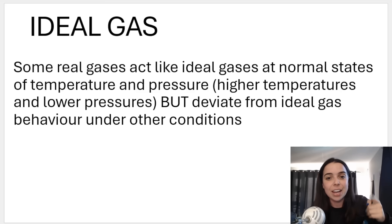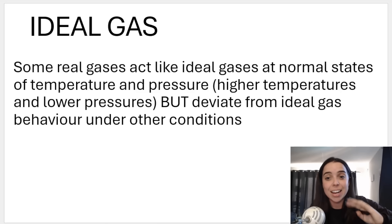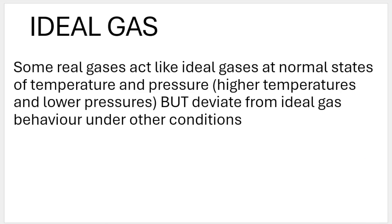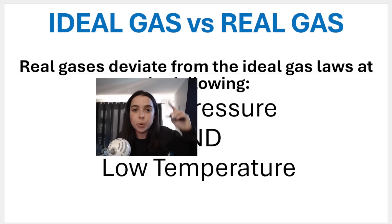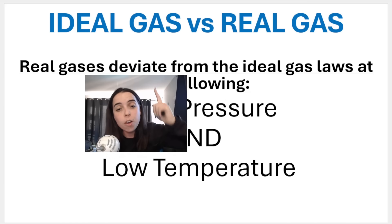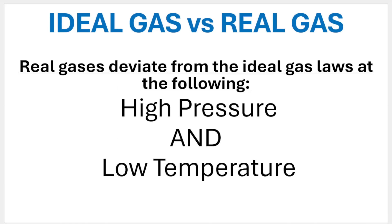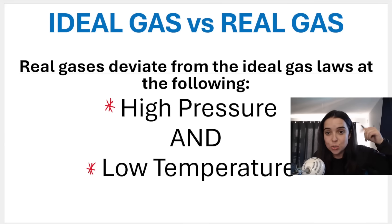As soon as we approach certain conditions such as low temperatures and high pressures, that's when real gases deviate from ideal gas behavior — they no longer act like ideal gases. When I say deviate, it means they no longer follow ideal gas laws. Real gases no longer behave like ideal gases when temperature is very low and when pressure is very high.